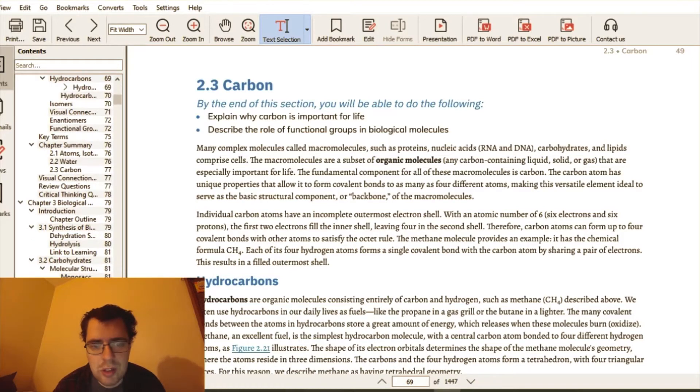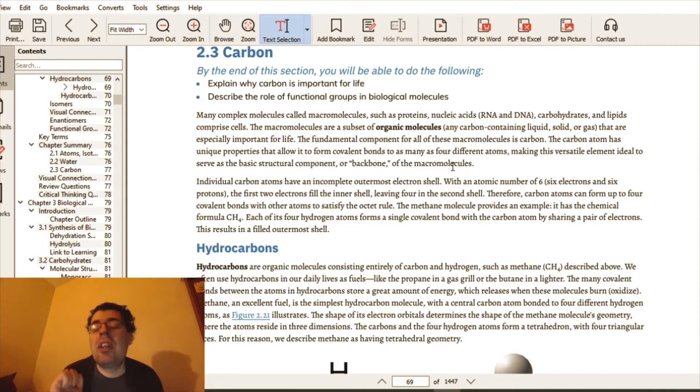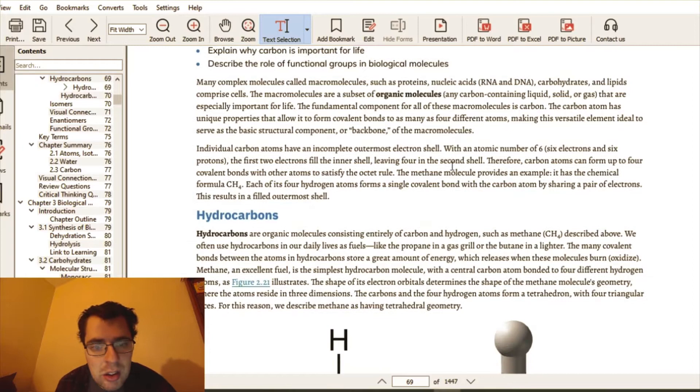Let's start here. The many complex molecules called macromolecules, macro meaning large, such as proteins, nucleic acids, which are RNA and DNA, carbohydrates and lipids, comprise cells. We'll discuss all of these in the next chapter. The macromolecules are a subset of organic molecules, any carbon containing liquid, solid or gas that are especially important for life. I was taught that organic molecules are anything that contains carbon, hydrogen, and potentially nitrogen and oxygen. So if it contains carbon and hydrogen, or carbon, hydrogen, and one or both of those three, it's organic. Anyway, these organic molecules are the backbone of the macromolecule.